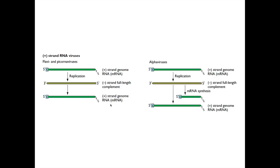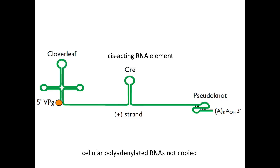Plus-strand RNA viruses can replicate their genomes through a negative strand intermediate. The picornavirus genome has elements at the 5'-prime end, middle, and 3'-prime end required for RNA synthesis: a cloverleaf at the 5'-prime end along with VPG, a cis-acting element called a stem-loop structure or CRE that's important, and finally a pseudoknot at the 3'-prime end. These ensure that the viral RNA is the only RNA copied by the polymerase and that certain aspects of RNA synthesis are adhered to.